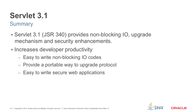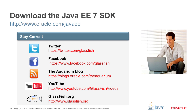As a summary, Servlet 3.1 provides non-blocking I/O, an upgrade mechanism, and security enhancements. It will increase developer productivity — you can now write non-blocking I/O code easily, and it provides a portable way to upgrade protocols. It's also easier to write secure applications. You can download the Java EE 7 SDK, which contains Servlet 3.1, available at oracle.com/javaee.